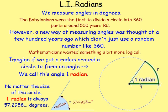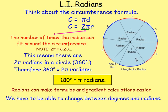How many radians can you fit inside a circle? Well, you can fit 1, 2, 3, 4, 5, 6 and a bit. The exact number of radians that you can fit works out to be 2π. Which means that 2π radians is 360 degrees, so 180 degrees is known as π radians.